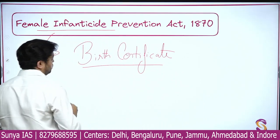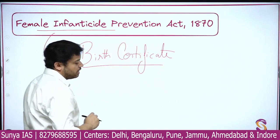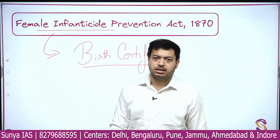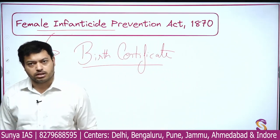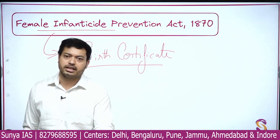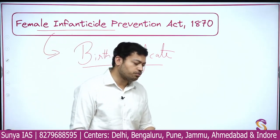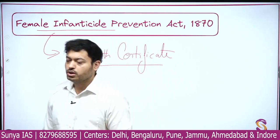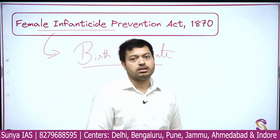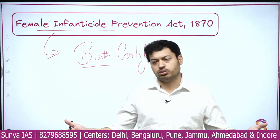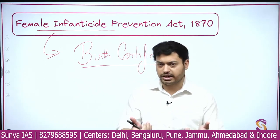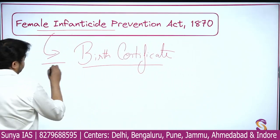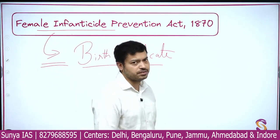The Female Infanticide Prevention Act had the basic agenda that if you have registered the birth of a child, the chances of killing that child are very less. Back in the day, it was a reality that if a female child was born, family members themselves used to kill the child — usually by drowning the child in a bucket of milk. So remember: the Female Infanticide Prevention Act 1870 is important because your birth certificate traces its origin there.